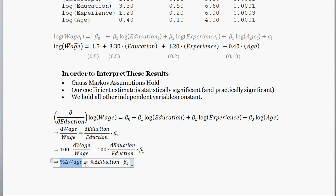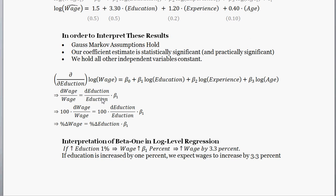We did a little math, but what exactly does that mean? How do we interpret the value of beta 1 that we got here? How do we interpret this 3.3? So what this tells us is that if we increase education by 1 percent, we can expect wages to increase by beta 1 percent. Since beta 1 is 3.3, if we increase education by 1 percent, then we expect wages to increase by 3.3 percent. Simple as that.